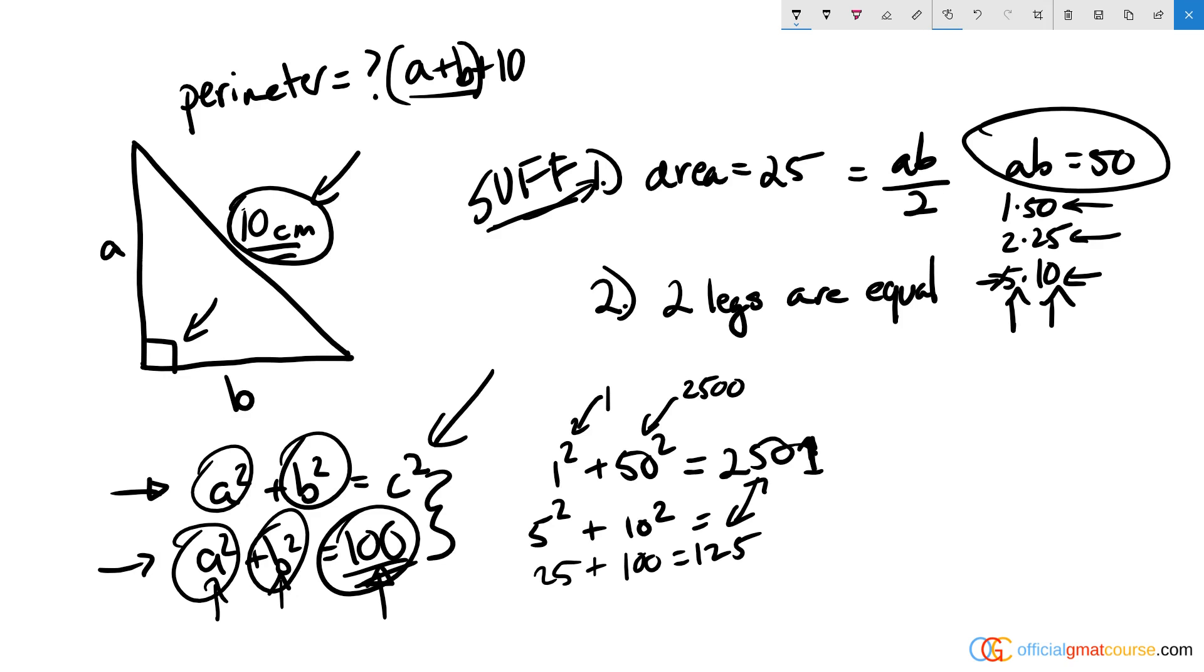Statement two: the two legs are equal. Well, that means a² + b² = c² is really like a² + a² = 100, which is 2a² = 100.